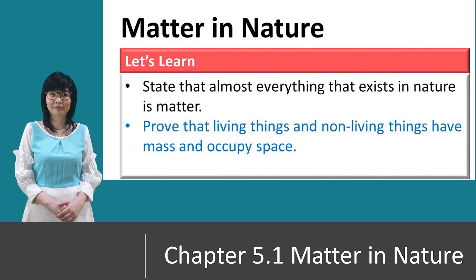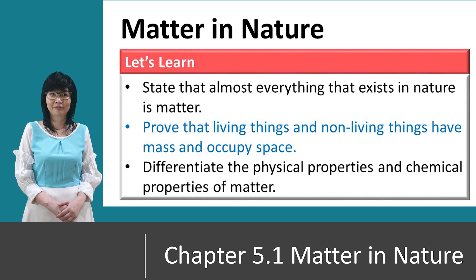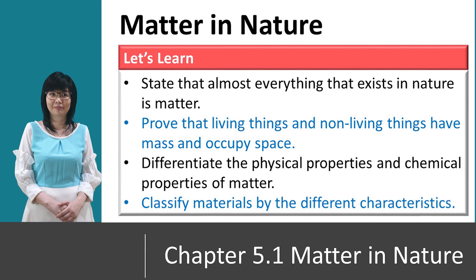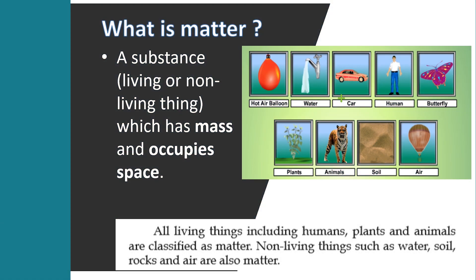You will prove that living things and non-living things have mass and occupy space, differentiate the physical properties and chemical properties of matter, and classify materials by their different characteristics. Matter is a substance — living or non-living thing — which has mass and occupies space. All living things, including humans, plants and animals, are classified as matter. Non-living things such as water, soil, and rocks are also matter.